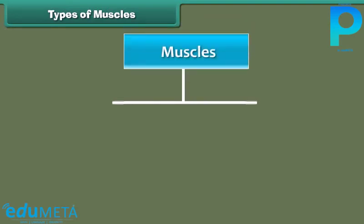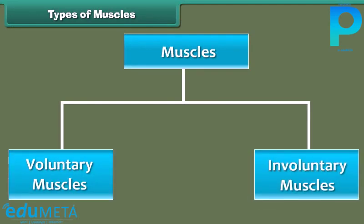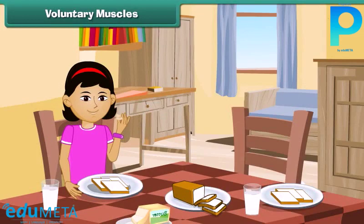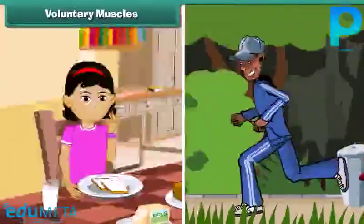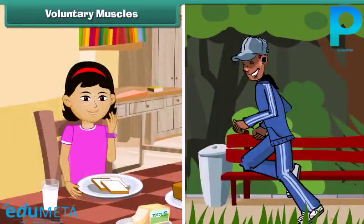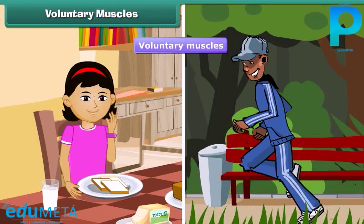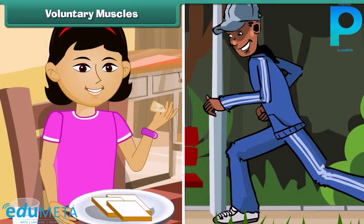According to the nature of their functions, muscles are of two types: voluntary muscles and involuntary muscles. Some actions are performed whenever we wish, like eating and walking. We can start or stop these actions whenever we want. Muscles that carry out these actions according to our wishes are called voluntary muscles. Our arms and legs contain voluntary muscles.